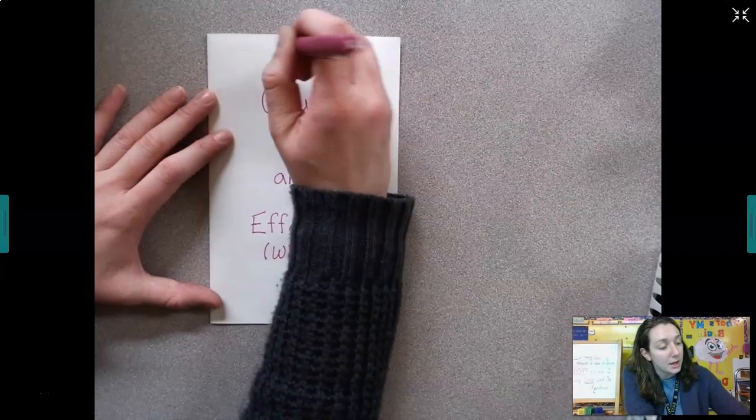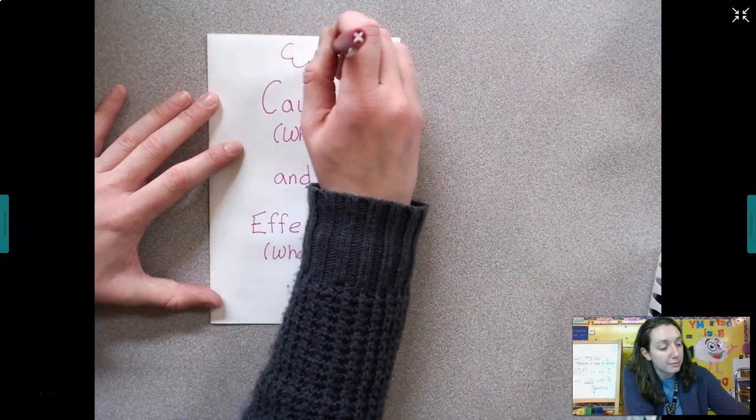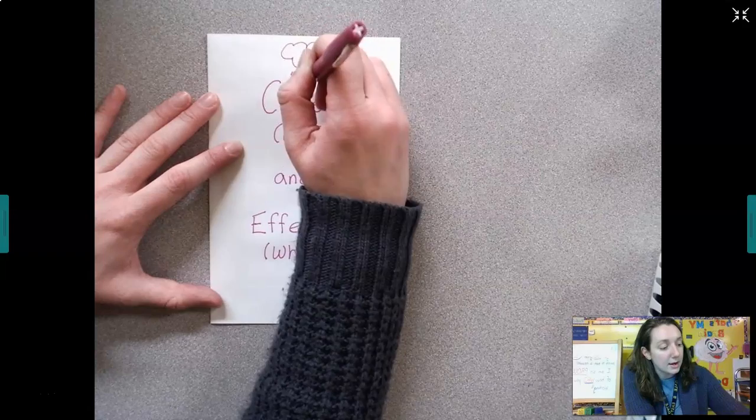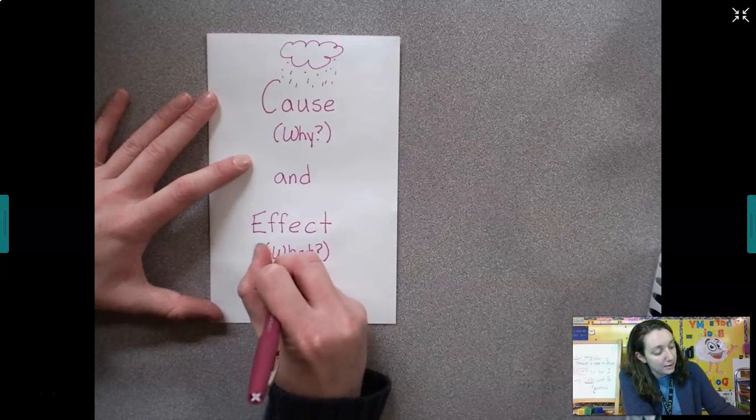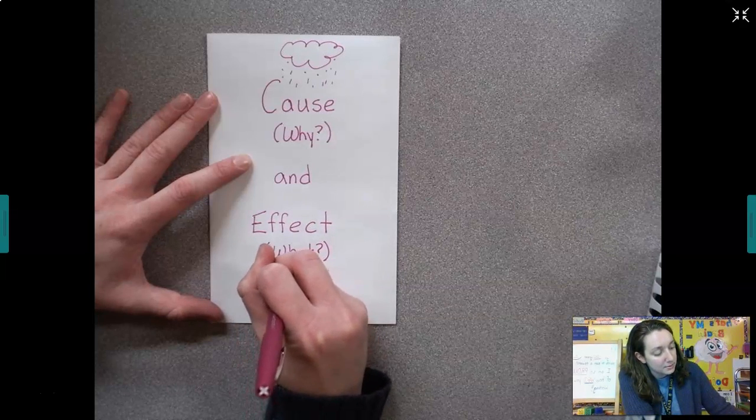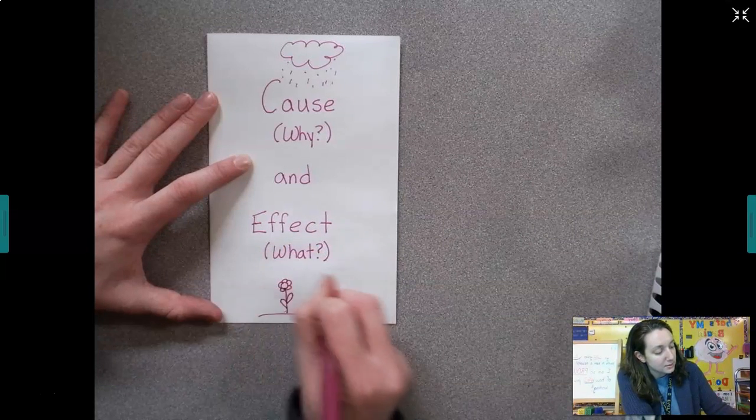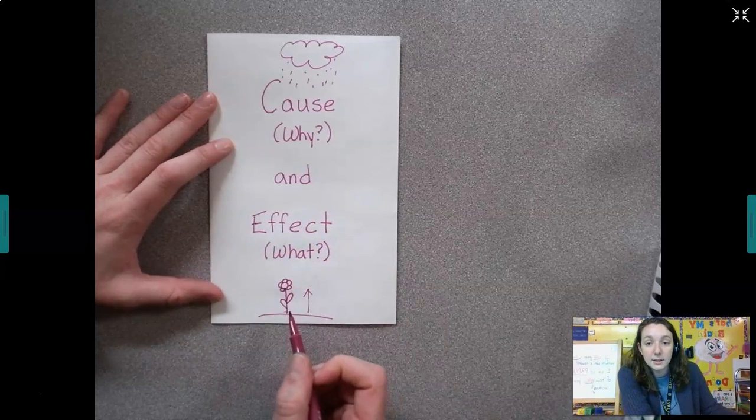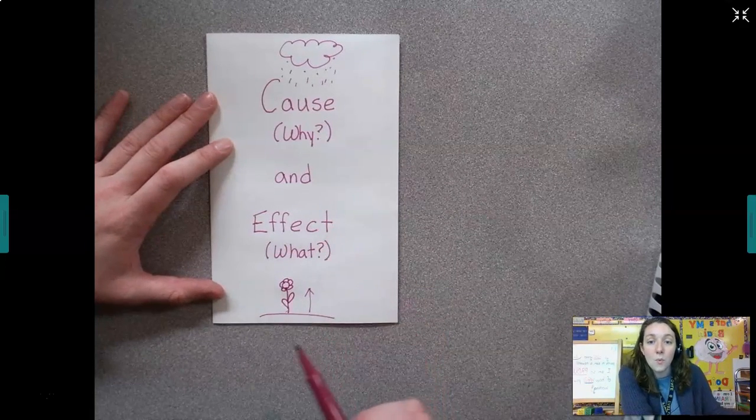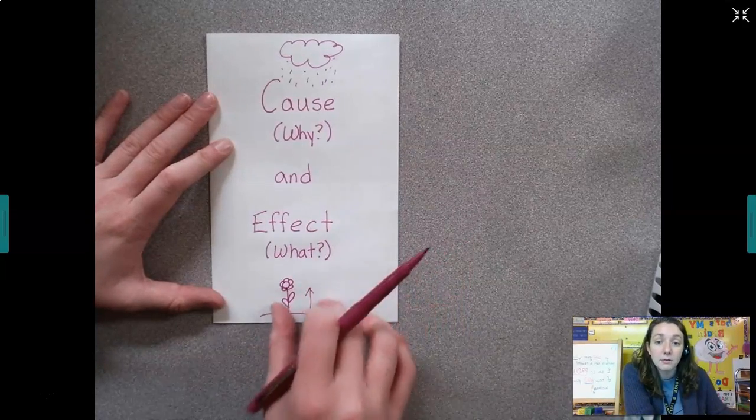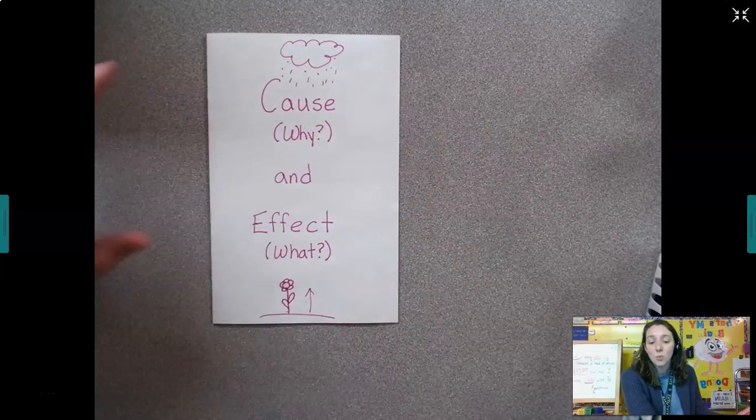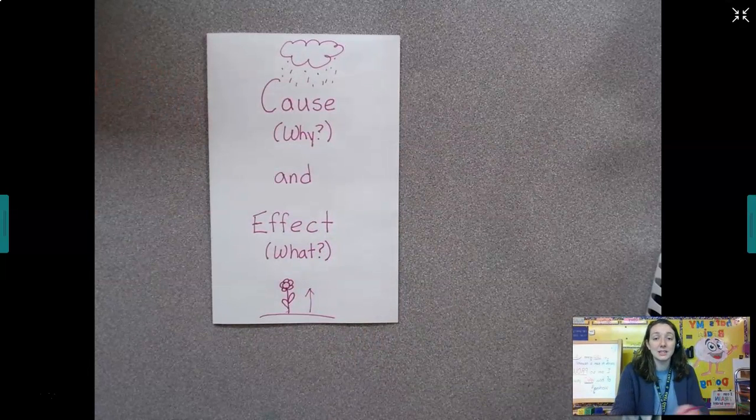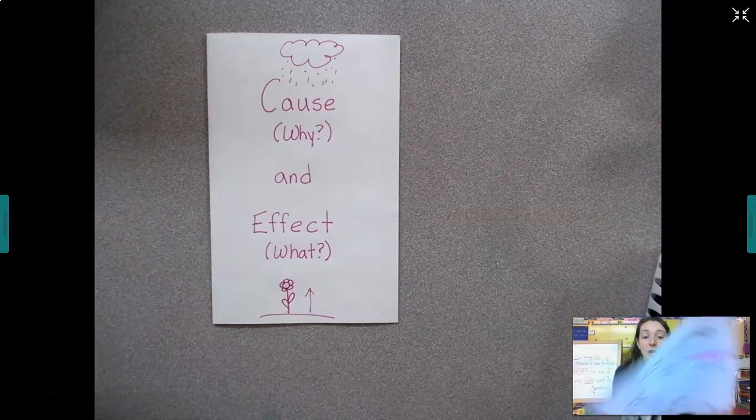So for example, we might have rain as our cause, and flowers growing would be the effect. So what happened because it rained? Flowers grew. Why did flowers grow? Because it rained. So the cause is why something happened, and the effect is what happened because of that cause. That's our cause and effect cover.